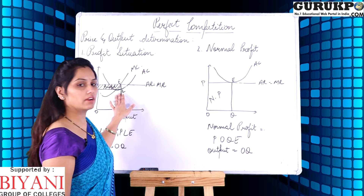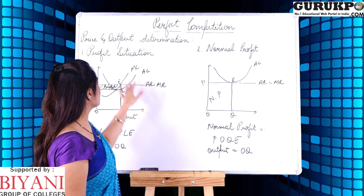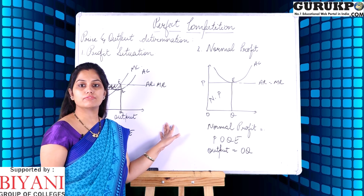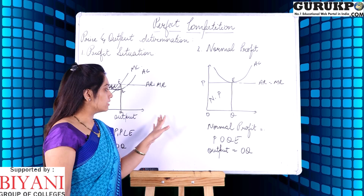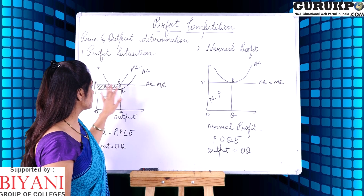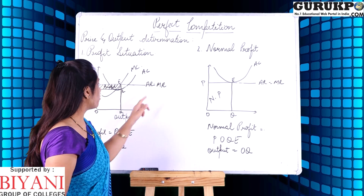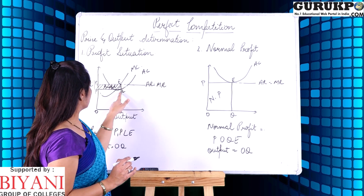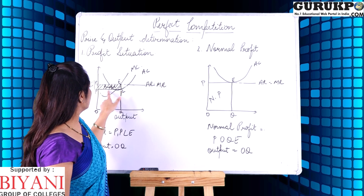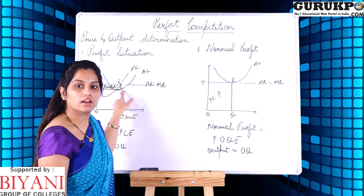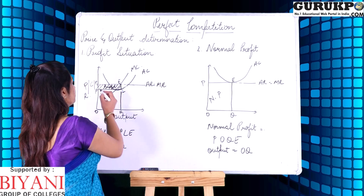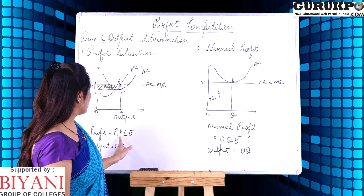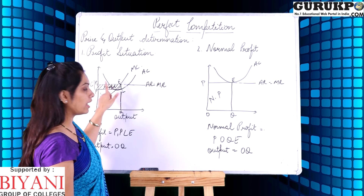In the profit situation, revenue is more than cost, so the average cost curve lies below the average revenue curve. The point of equilibrium is where MR equals MC. From this equilibrium point, we draw a line to the average cost curve parallel to the x-axis, forming a shaded box which represents the super-normal profit. The profit is shown as the box P1PEQ, and the output is OQ.